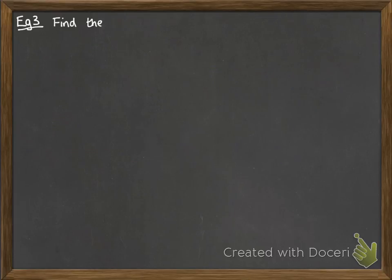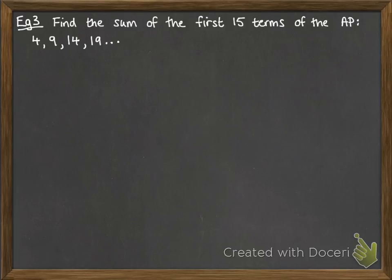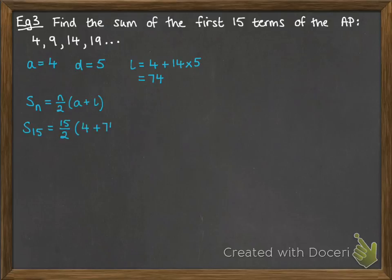Examples of using this. We want to find the sum of the first 15 terms of this arithmetic progression. So, A is 4. The difference is 5. It's going up in 5s. And we want to work out the sum of the first 15 terms. So, the last term will be 4 plus 14 times 5, just using our nth term there. So, that will be 74. So, the sum of the first 15 terms, we're going to use this formula. And we replace n with 15. A is 4. L is 74. So, we get 585.